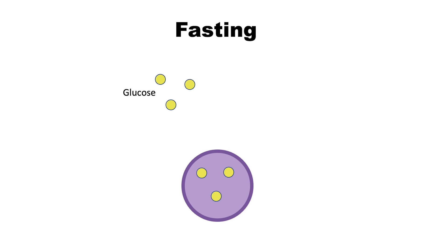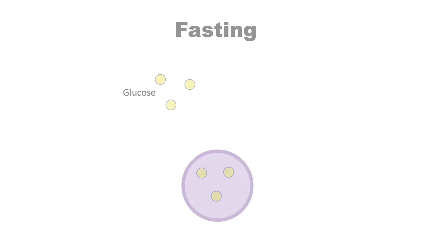When it gets to fasting — when you're not eating — the insulin levels go down, and that's the signal that your body is going to start to use its stored energy. This is the normal situation: a normal amount of glucose inside the cell, a functioning receptor on the surface, and a normal amount of glucose overall.